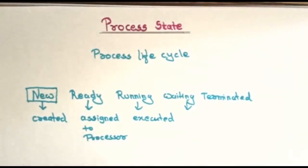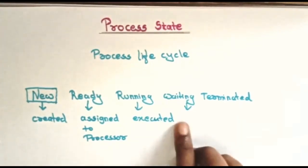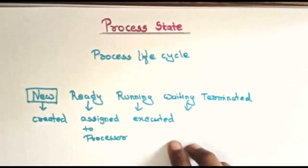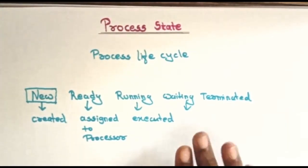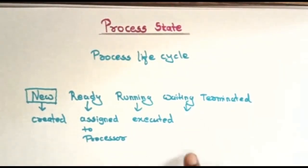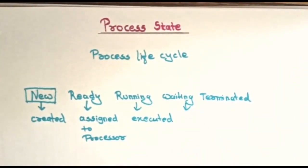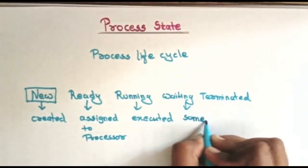In the waiting state, the process is waiting for some event to occur. It remains in the waiting state until the problem or disturbance — that is, I/O or event completion — is resolved. Whenever the problem is solved, the process is ready to do its work again — in short, some event has occurred.